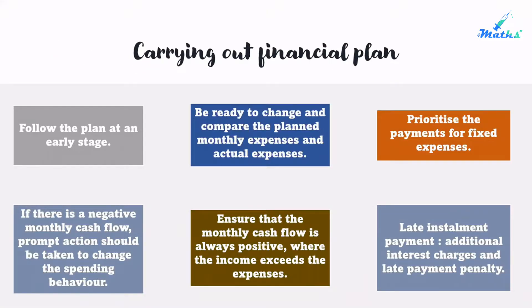Next is carrying out a financial plan. When carrying out a financial plan, we must follow the plan at an early stage. We must also be ready to compare the planned money expenses and actual expenses. When carrying out a financial plan, we have to prioritize the payment of fixed expenses — for example, housing loan installments, credit card payments, or insurance payments. A late installment payment will lead to additional interest charges and a late payment penalty.